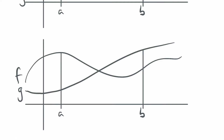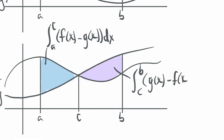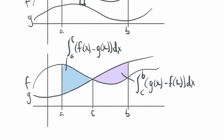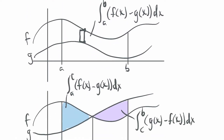If the two graphs cross each other at some point C, then from A to C the area is the integral of f(x) minus g(x) dx, but from C to B, since they've crossed, g is on top and f is on the bottom, so we use the integral of g(x) minus f(x). The overarching theme is top minus bottom. If functions cross each other or cross the x-axis, you need to do more than one chunk.